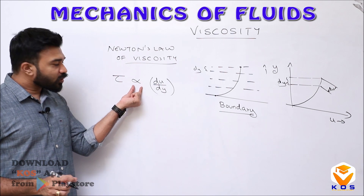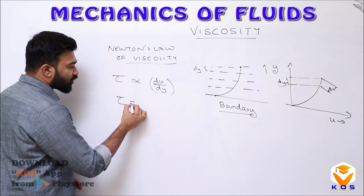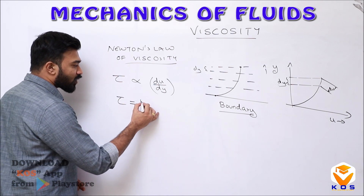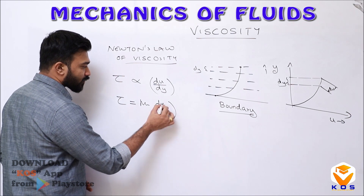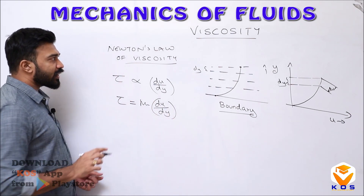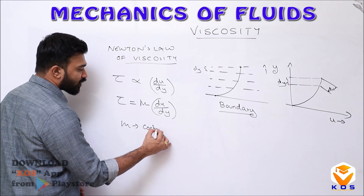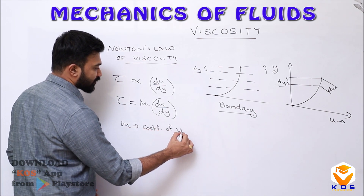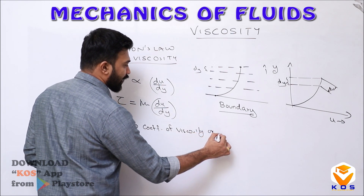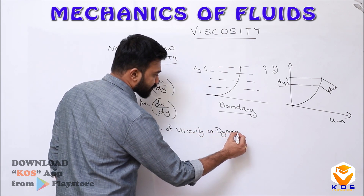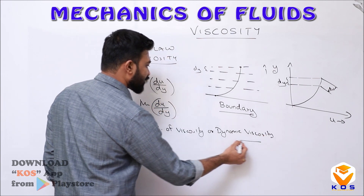So using the proportionality constant, Newton's law of viscosity is written as tau equals mu into du by dy, where the proportionality constant mu is called the coefficient of viscosity, or dynamic viscosity, or simply viscosity.